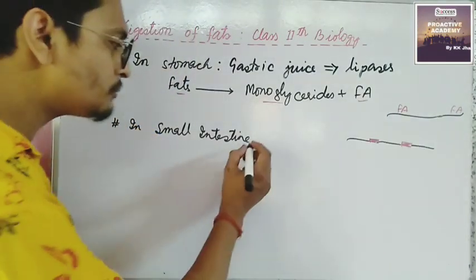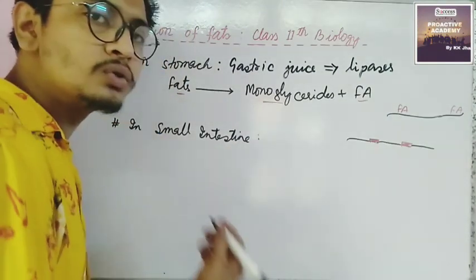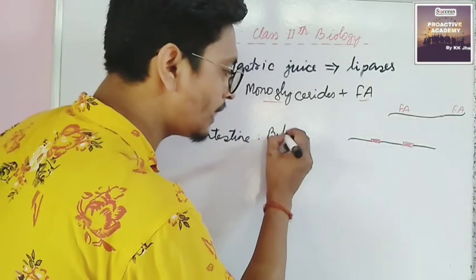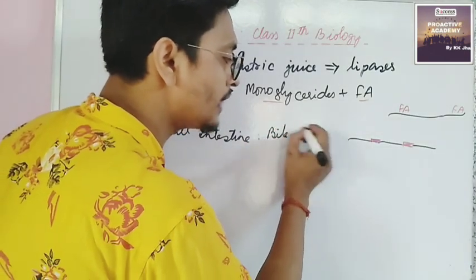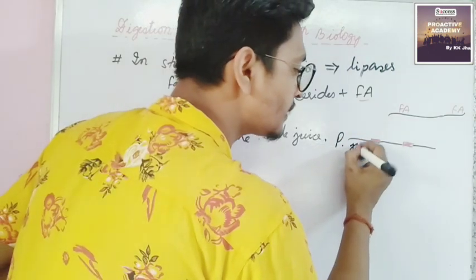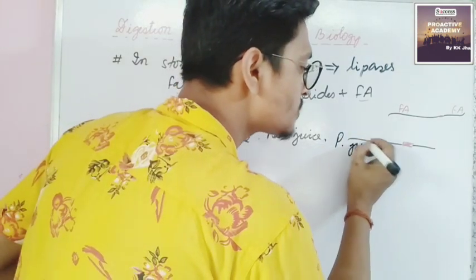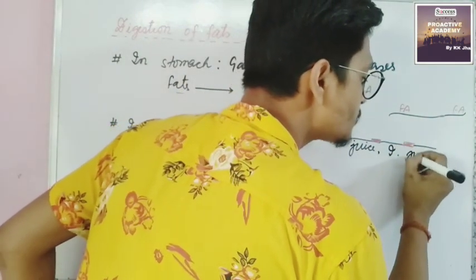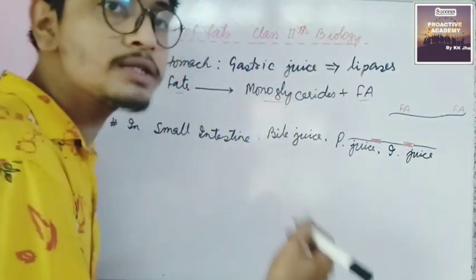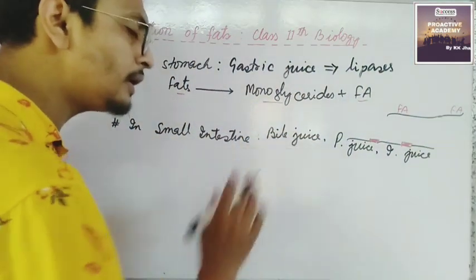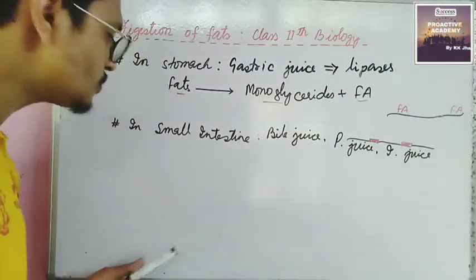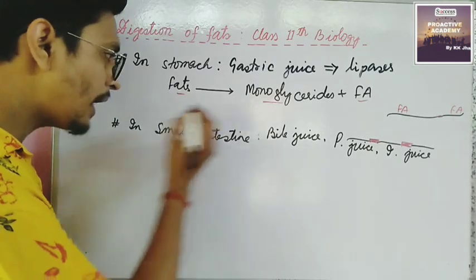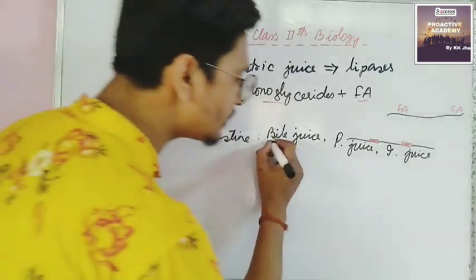Now we go to the small intestine. In the duodenum, it receives the secretions of bile. So in the small intestine, we have bile juice, then pancreatic juice, then intestinal juice — that is, succus entericus. First of all, bile juice will act.